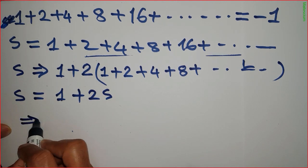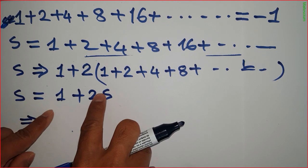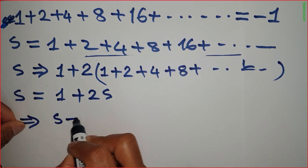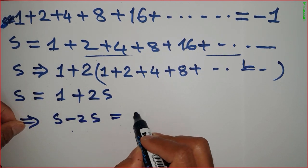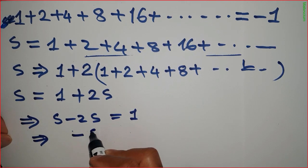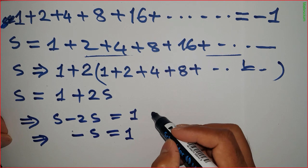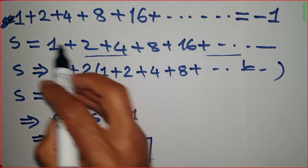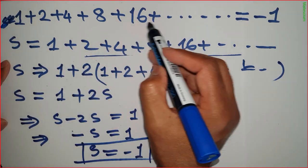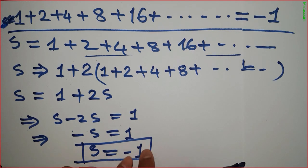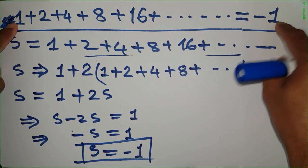So S equals 1 plus 2S. Moving 2S to the left side: S minus 2S equals 1, which gives minus S equals 1. Therefore S equals minus 1. That means this infinite series 1 plus 2 plus 4 plus 8 plus dot dot dot is equal to minus 1.